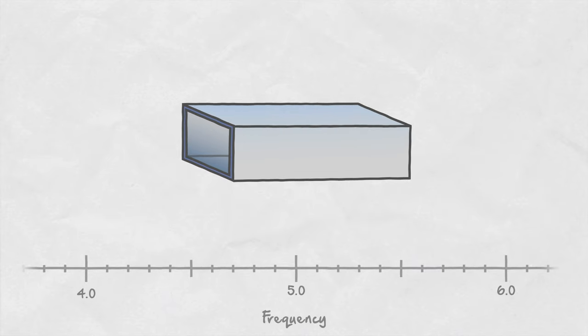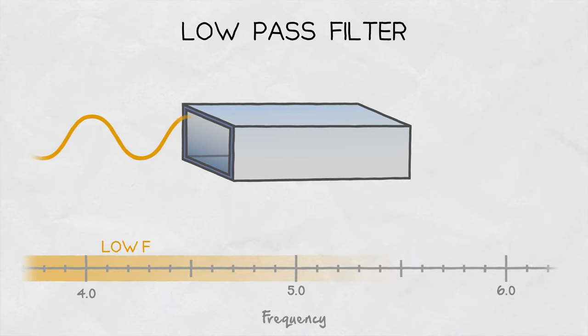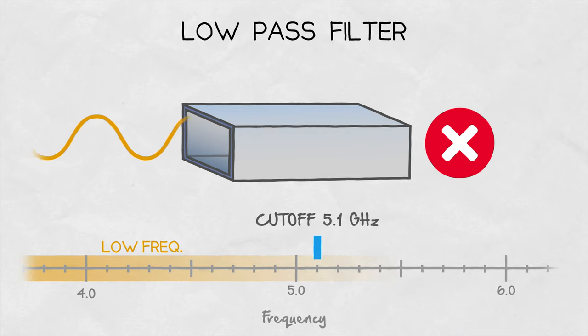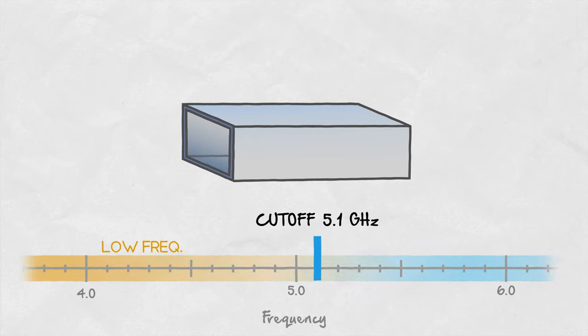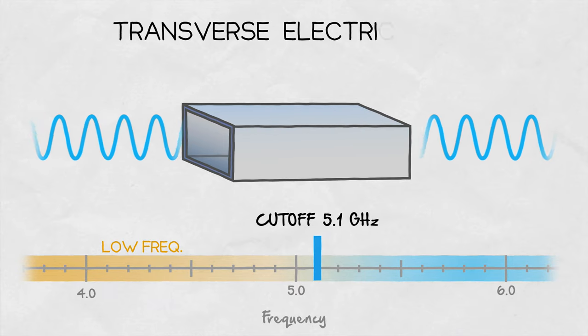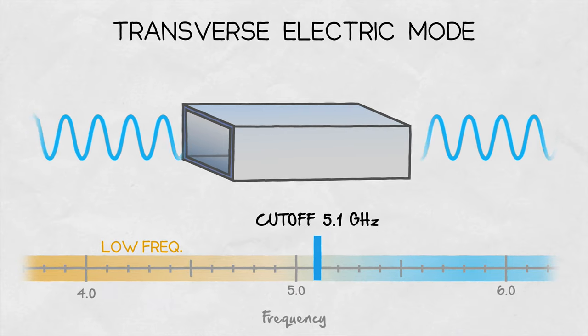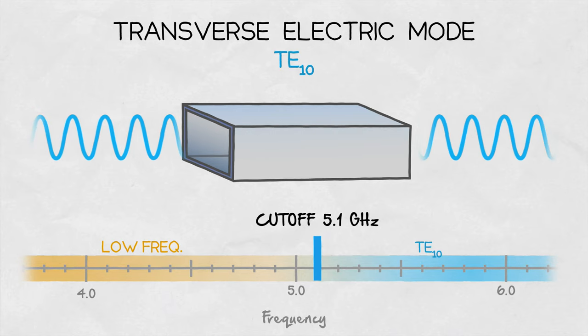Unlike coaxial cables, waveguides work as low-pass filters. They don't let low frequency electromagnetic waves travel through below what's called the cutoff frequency. Above this frequency, signal travels freely in what's known as the first transverse electric mode, commonly abbreviated as TE10 mode.